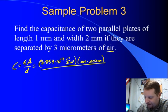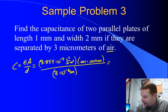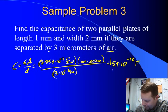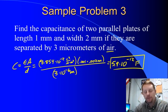Divided by their separation, 3 microns, or 3 times 10 to the minus 6 meters. Run through all of that, and I come up with 5.9 times 10 to the minus 12 farads, or 5.9 picofarads.